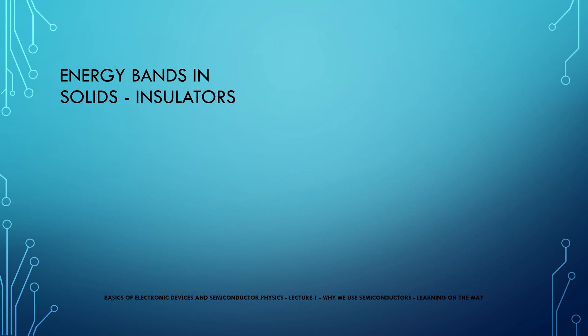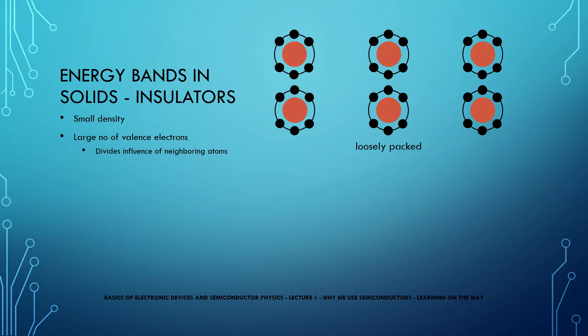However when it comes to insulators, their densities are small and they have a large number of valence electrons which divides the incoming influence of neighboring atoms among these valence electrons. Since they are less close to each other, one neighboring atom nucleus cannot easily influence electrons. Hence they require a lot of energy to make an electron flow.